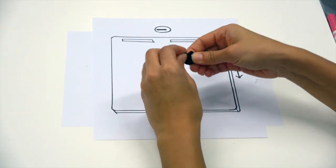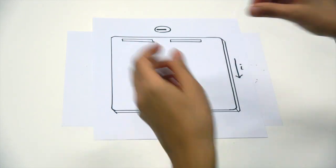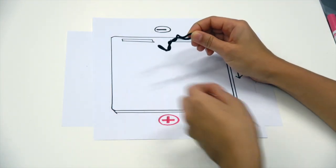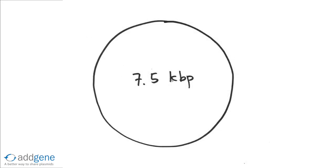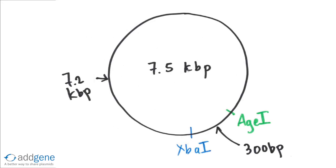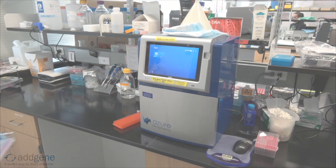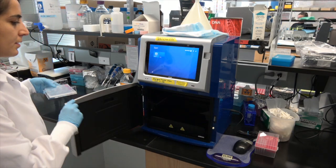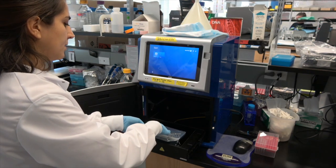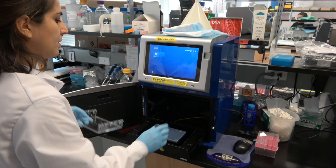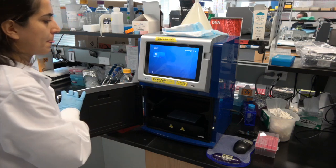For example, supercoiled DNA has higher transfection efficiency than nicked DNA. While in theory and in textbooks restriction digestion is straightforward, interpreting the results of a digestion in practice is easier said than done. In this video we will digest a plasmid of known identity with restriction enzymes, run the products on an agarose gel, and analyze the results. We'll focus on identifying the bands produced under different conditions and use the results to make conclusions about the plasmid.